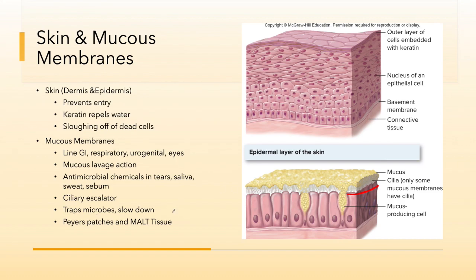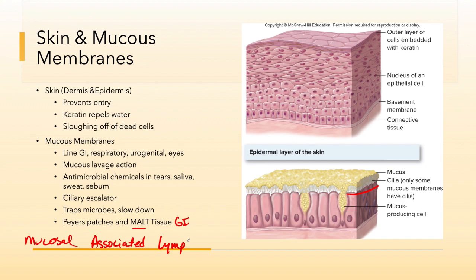Within our GI tract — specifically in our gastrointestinal tract, and also in the urogenital and parts of the respiratory — we have tissue called MALT tissue. MALT stands for mucosal-associated lymphatic tissue. It is located, for the most part, in the GI tract. In anatomy, you may have been asked to identify Peyer's patches. Peyer's patches are part of the MALT system, and this is considered a third branch of the immune system.